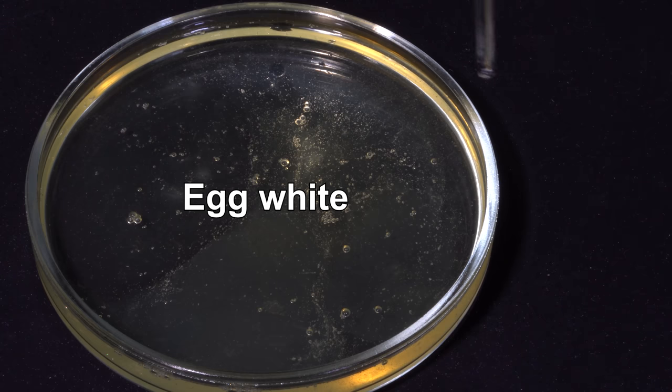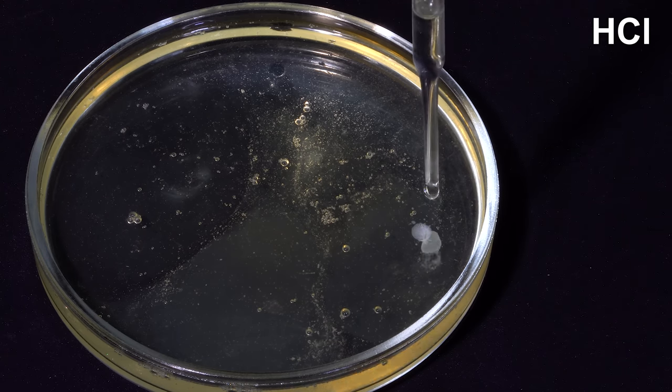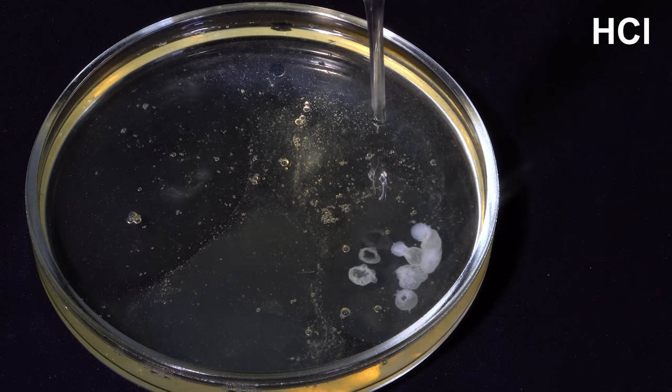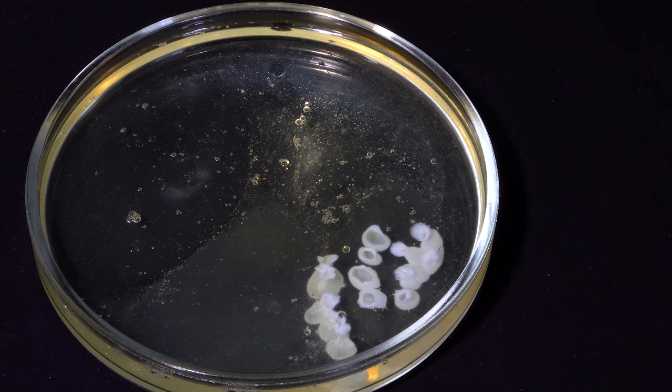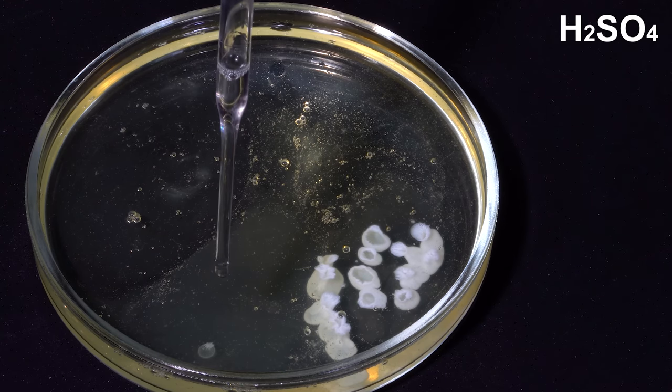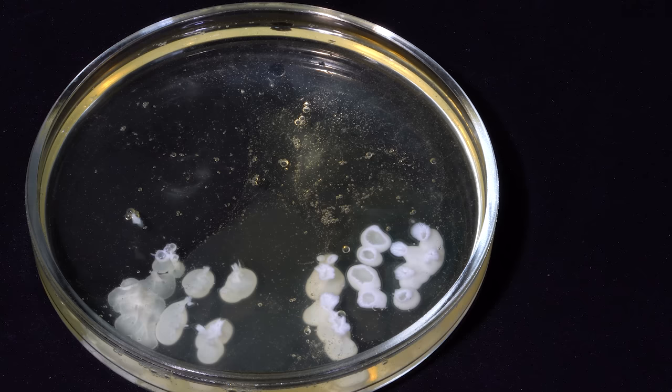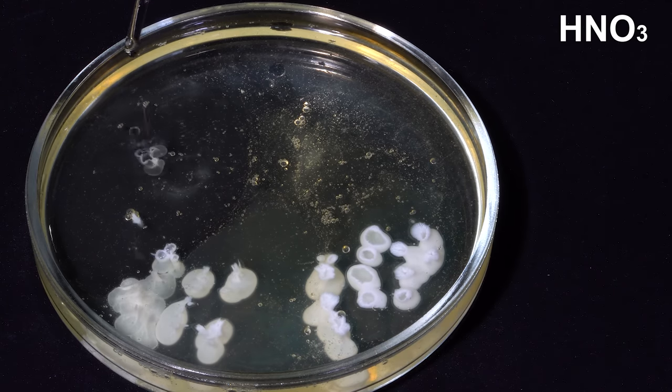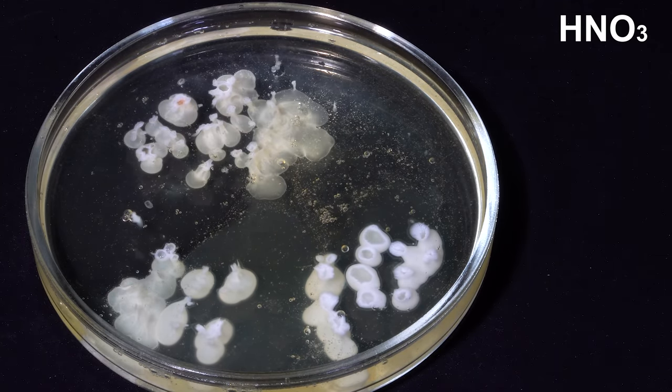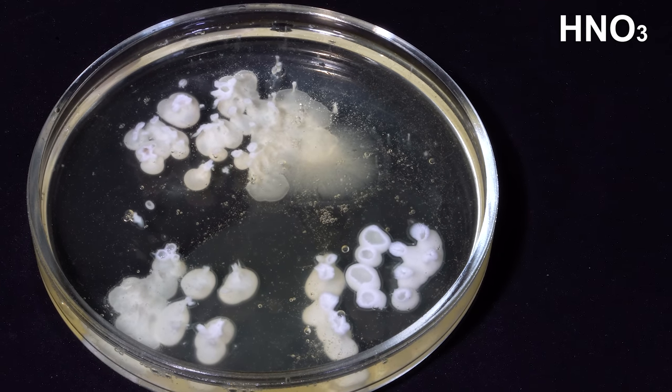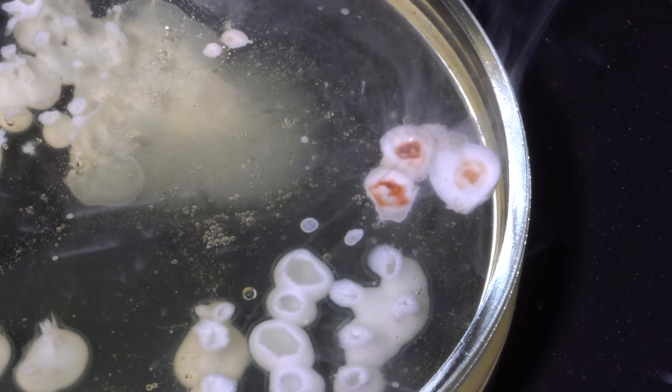Let's take a look at how an egg white will fold under the influence of various strong inorganic acids. Here I'm adding a few drops of hydrochloric acid, then sulfuric acid, then nitric acid. And to top it all, a few drops of chlorosulfonic acid. Take a look at the process of protein folding in slow motion.